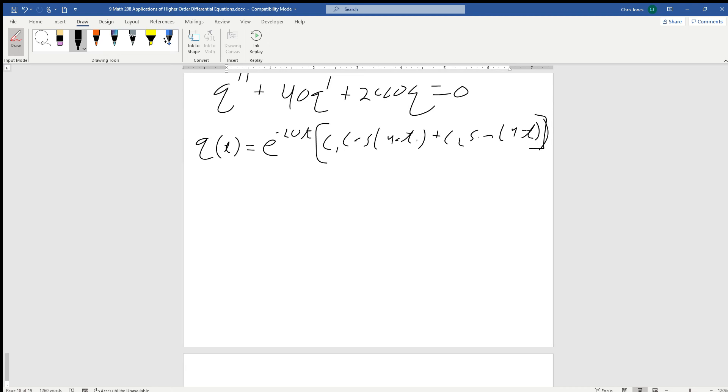If we want to find Q prime, that's going to be minus 20e to the minus 20T, and we keep the C1 cos 40T, C2 sin 40T, plus we keep that e to the minus 20T, and we're going to have minus 40 C1 sin 40T plus 40 C2 cos 40T.